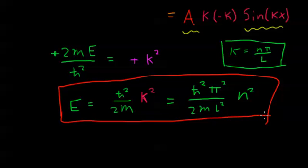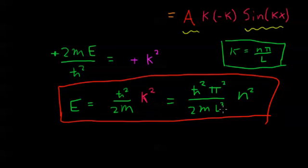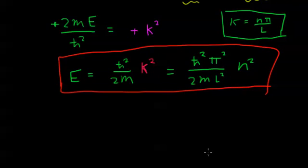What does this mean? It means that since n can only take on integer values, the energy E has a discrete number of allowed values. It can't take on just any value — if n equals 1, E equals this constant; if n equals 2, E is 4 times this; if n equals 3, it's 9 times this. But it can't take values in between. So we have this spectrum of energies that are allowed in this box.